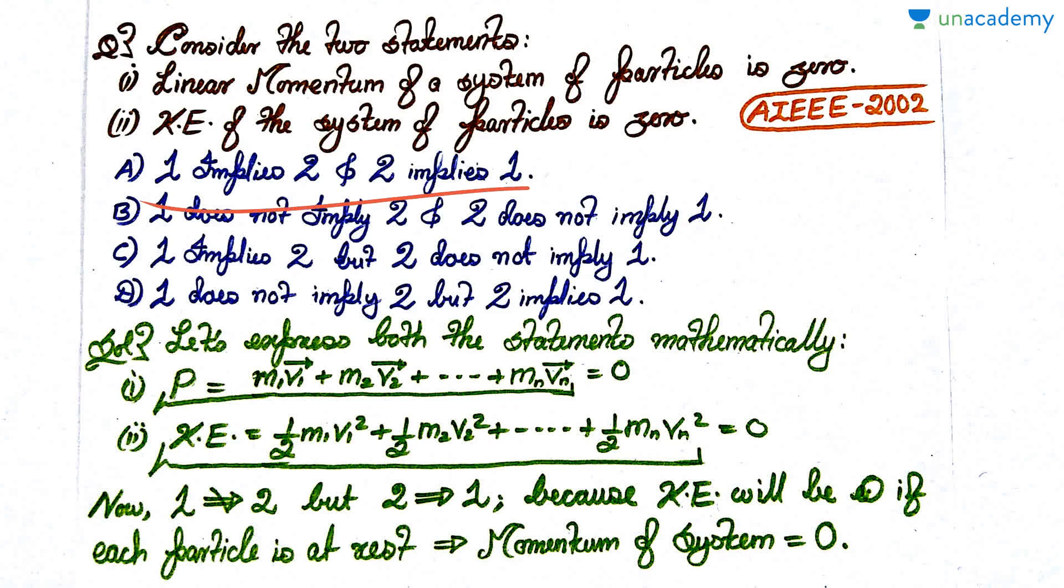Option A is first implies two and two also implies one. Option B is one does not imply two but two does not imply one as well. C option is one implies two but two does not imply one, and D is one does not imply two but two implies one. A lot of implications and counter implications. Pause the video, attempt the question, and then we'll discuss the solution.